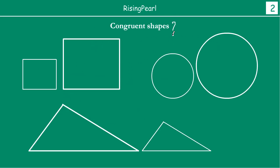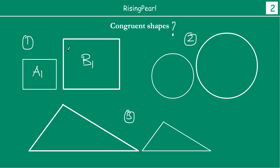Now we are going to take some more examples — congruent shapes or not. Let us call this Example 1, this is Example 2, and this is Example 3. In Example 1, we have taken two squares — let us call them A1 and B1. If we take A1 and put it on B1, will it exactly and completely cover B1? No, because A1 is a small square, so there will be a lot of space on B1 not covered by A1. So we say A1 and B1 are not congruent squares.